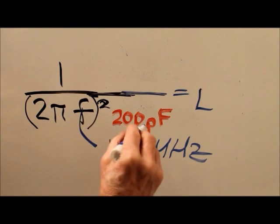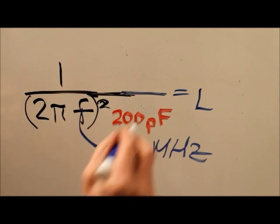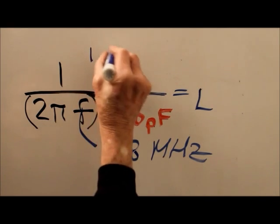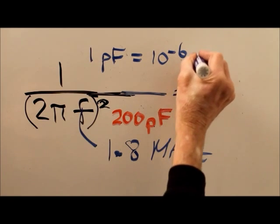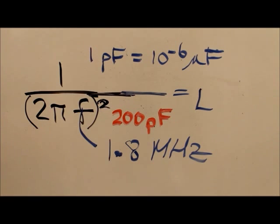Here's a caution: this is not in microfarads. This quantity here is given in picofarads, and remember that 1 picofarad equals 10 to the minus sixth microfarads. I'm not going to solve this for you. I'm going to make you do it for yourself, but I'm not even going to tell you what the answer is. I'm going to make you figure that out for yourself. Calculate it three or four times to make sure you're right.